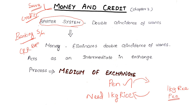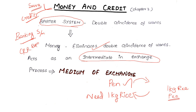We are not able to eliminate this double coincidence of wants on our own. Now we need to exchange money. Money acts as the intermediate — money is the medium of exchange.